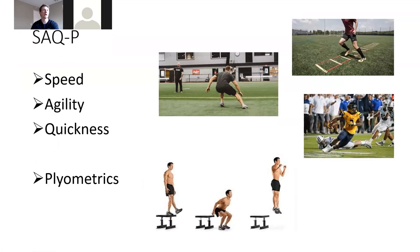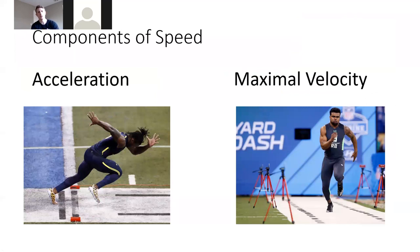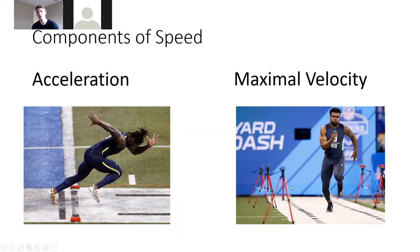Speed has distinct components. Acceleration is the rate of change in velocity — speeding up from start to maximal velocity — and is critical for change of direction movements. Maximal velocity is how fast an athlete can move and maintain, required at further distances. It takes approximately 30 yards to achieve maximal velocity, so acceleration dominates in short distances while maximal velocity is more relevant over longer ones.